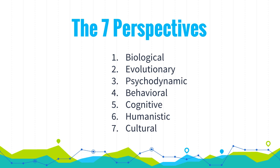The evolutionary perspective studies how natural selection of traits promotes the survival of genes — so kissing is seen as the first step toward reproduction. Third, the psychodynamic perspective focuses on unconscious drives and conflicts; we may do something without knowing why. From this view, kissing is the first expression of sexual desire.